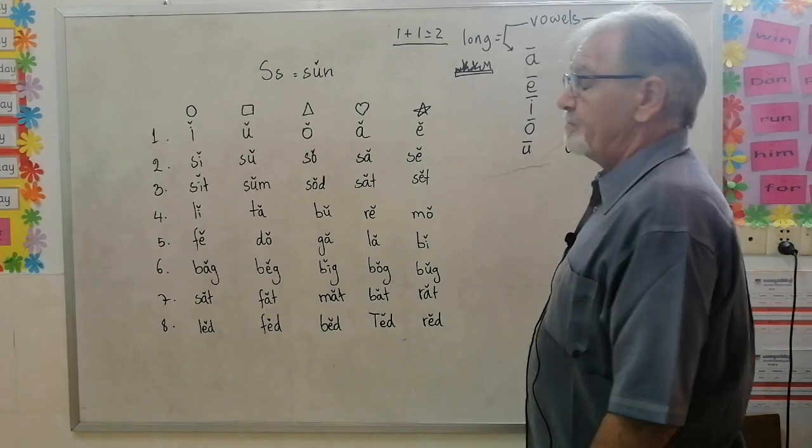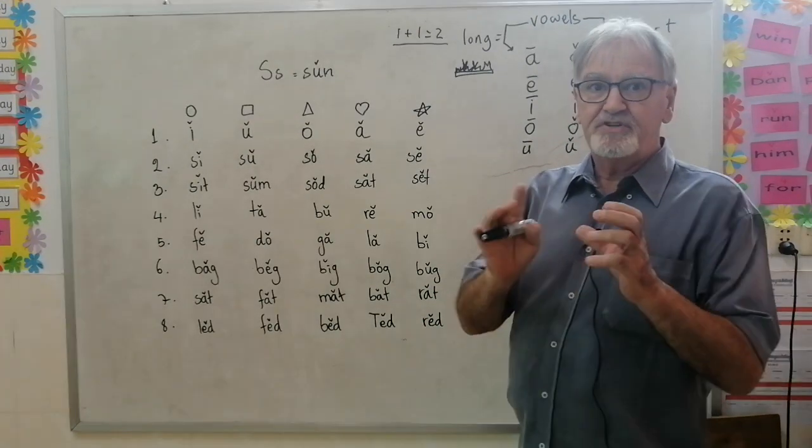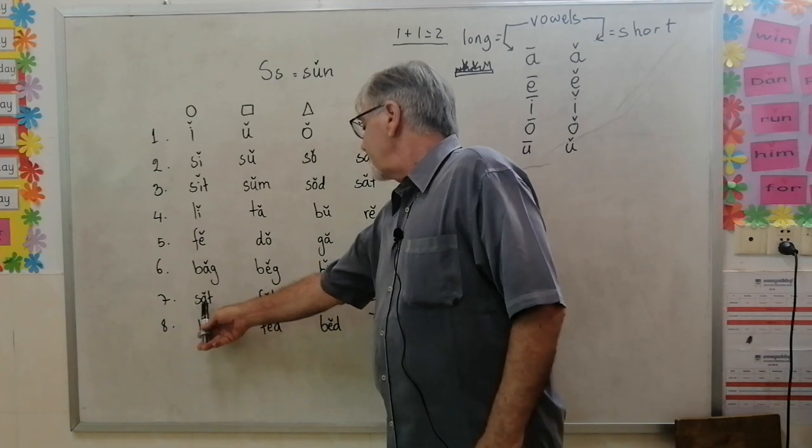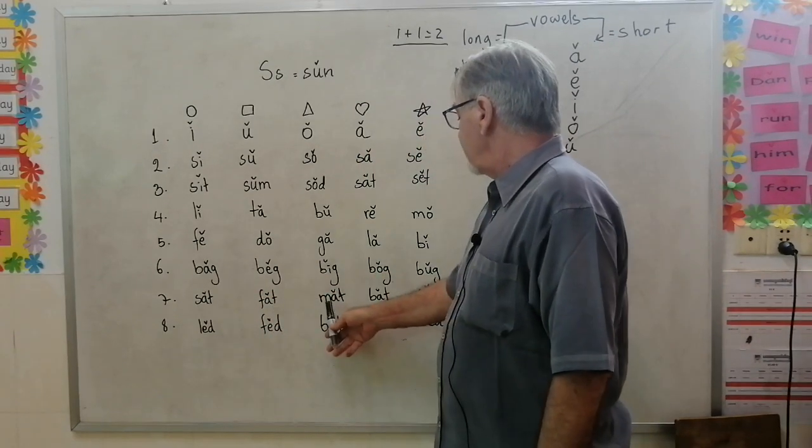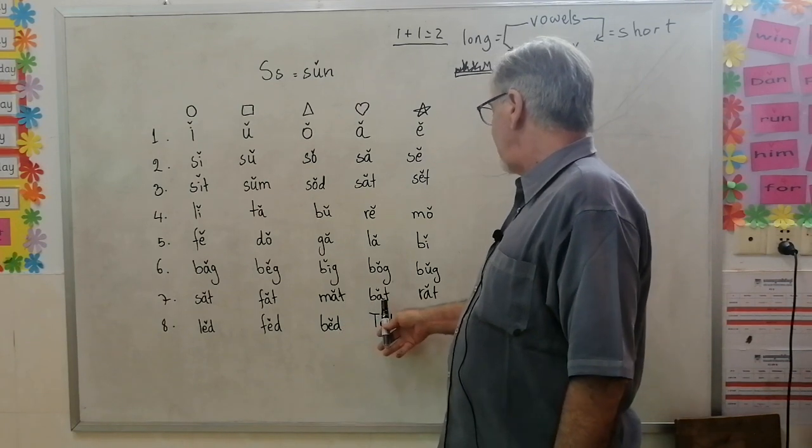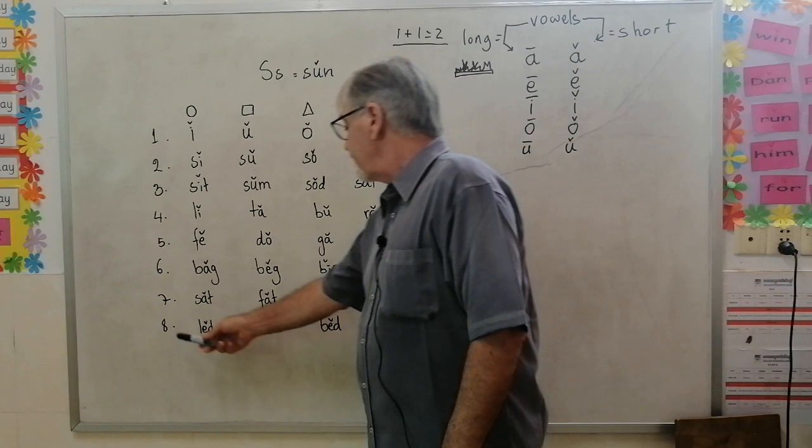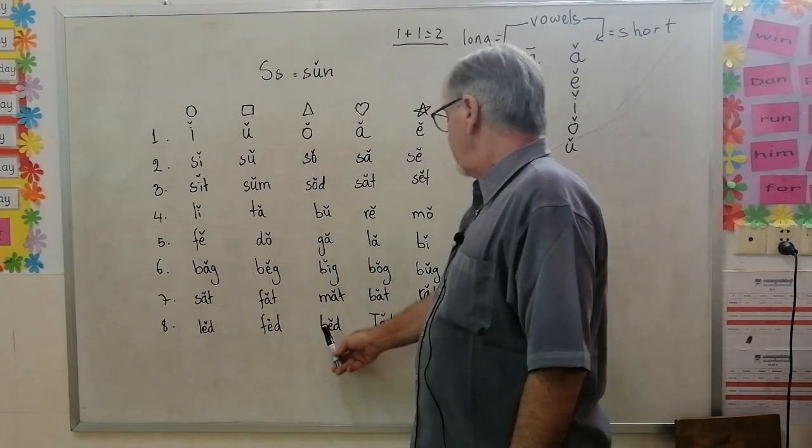Bug is an animal, or an insect, sorry, with a shell. Number seven: sat, fat, mat. Number eight: led, fed, bed, ted, red.